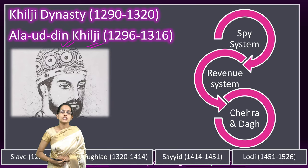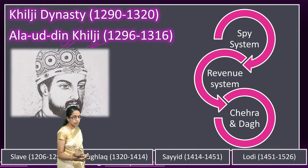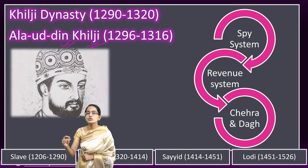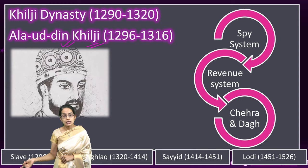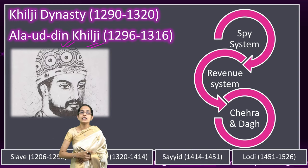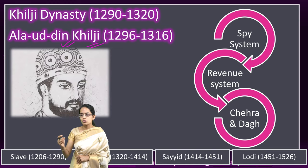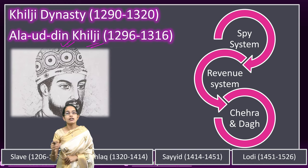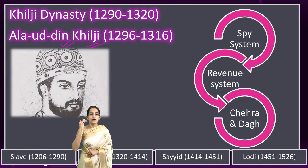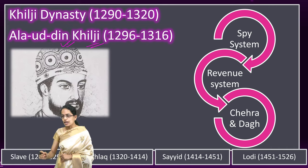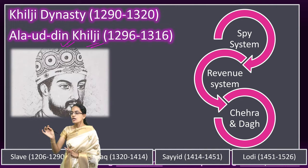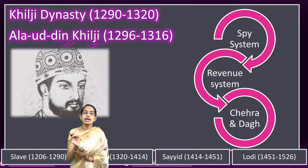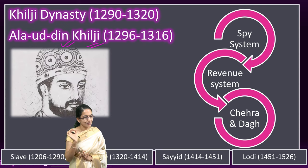During the time of Alauddin Khilji, numerous administrative systems developed. Daag and Chehra are some of the most renowned systems, popular even during the Mughal Empire. Chehra was the descriptive roll of soldiers, and Daag was the branding of horses to prevent substitution of inferior breeds, helping in identification of the actual breed. These became major military administrative systems under Alauddin Khilji.